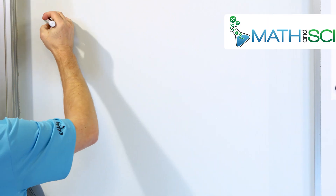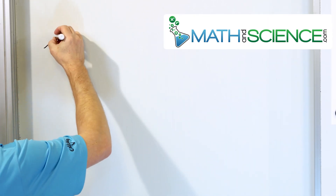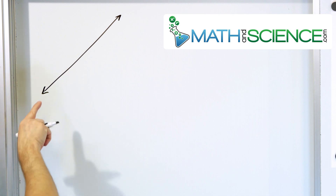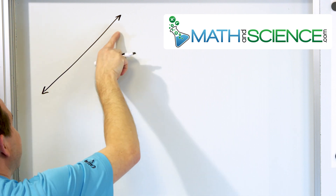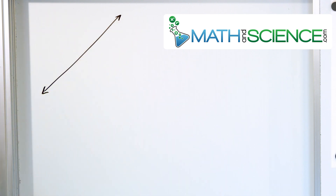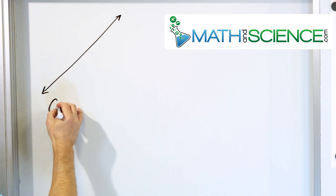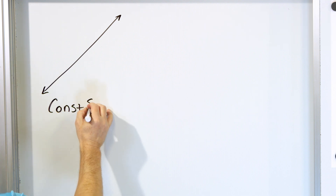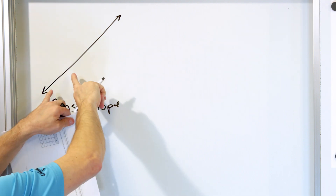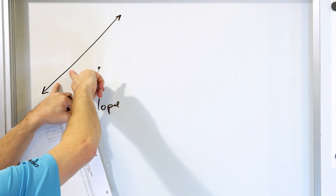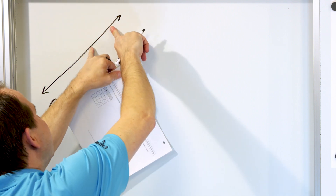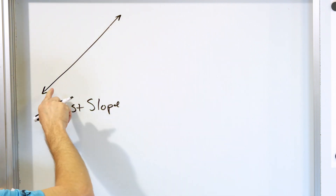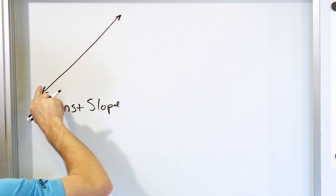If you really think about it, if you draw just any line in some random slanted direction, then the slope here is what we call constant slope. So I'll put constant slope. And that means if I pick two points here, I'll find some slope. And if I pick two points over here, I'll find the exact same slope.